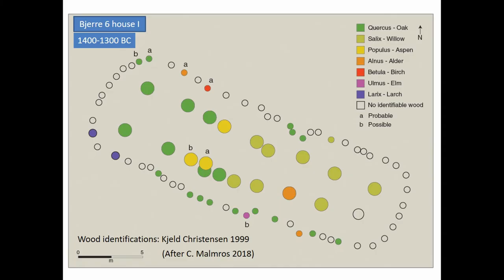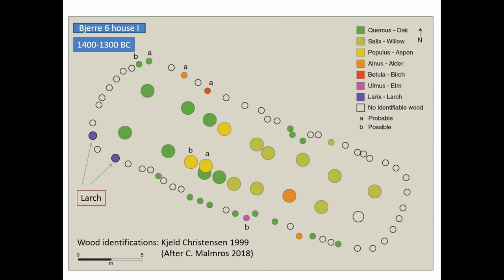Due to a high water table, the lower parts of many posts were preserved. For South Scandinavian archaeology, this was a special situation where it could be studied how many different tree species were used during construction of this house in two phases. In the eastern end of the house, willow was used for roof-supporting posts. As willow is known to be soft, weak, and rots very easily, it is a clear indication of lack of proper building materials. Even driftwood was used, illustrated by two pieces of larch from the corner of the house. During the Bronze Age, the nearest areas with larch were in the Alps or in Siberia. Therefore, our posts were no doubt gathered as driftwood from the nearby North Sea, most likely originating in Siberia.